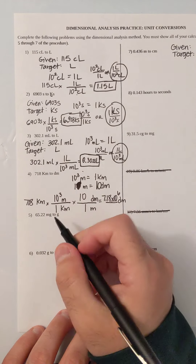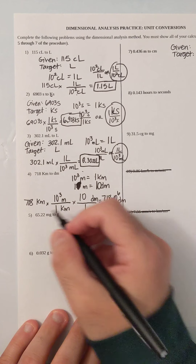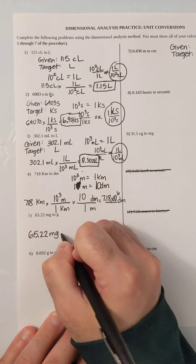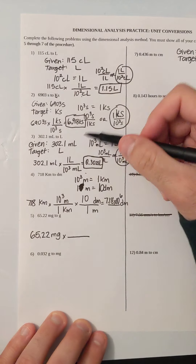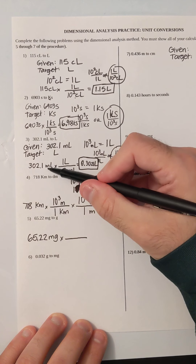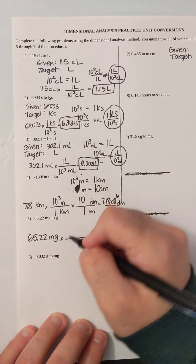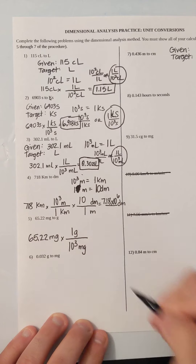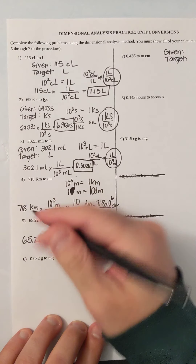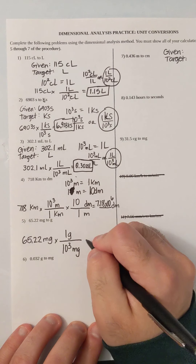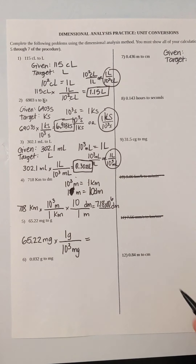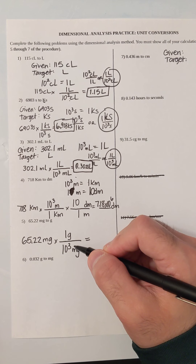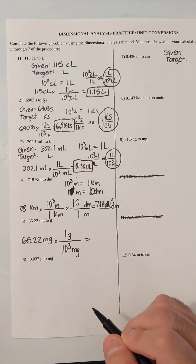Back to a one-stepper. I have 65.22 milligrams to grams. Maybe you already know from a previous question how to do milli to the base unit. If I start with milli, I'll put the base unit on top: one gram over 10 to the third milligrams. So I can do this without showing all that work. I'll do 65.22 milligrams times one divided by 10 to the third, and I get 0.06522 grams.